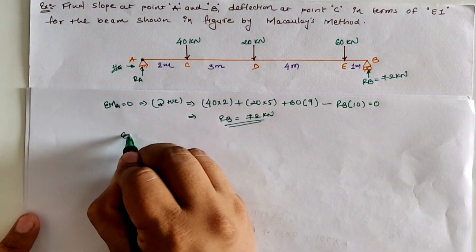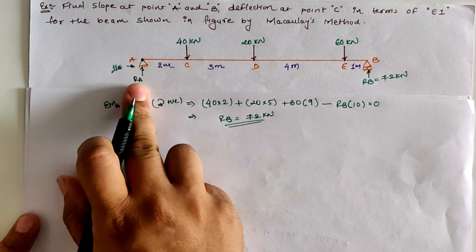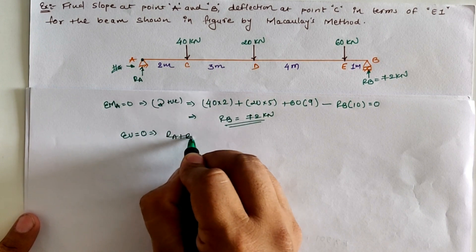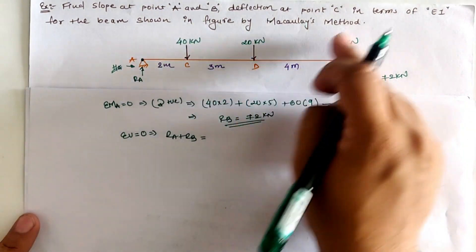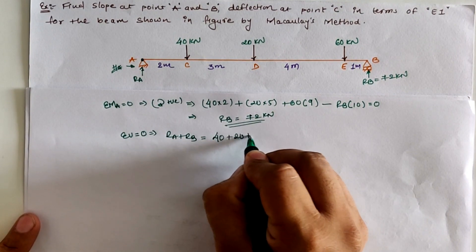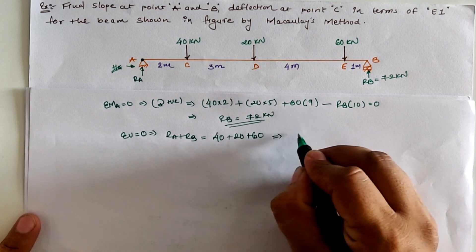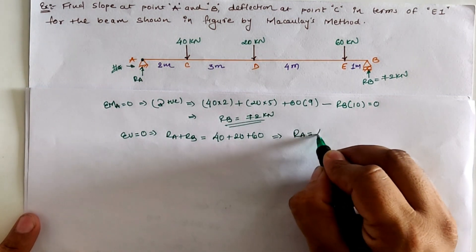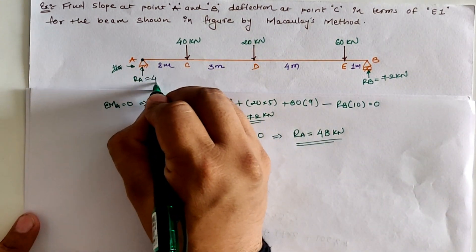The next equilibrium condition is sigma V equal to zero. Vertical upward forces are RA and RB, and downward loads are 40 + 20 + 60. Putting the value of RB as 72, we get the reaction at location A as RA = 48 kilonewtons.